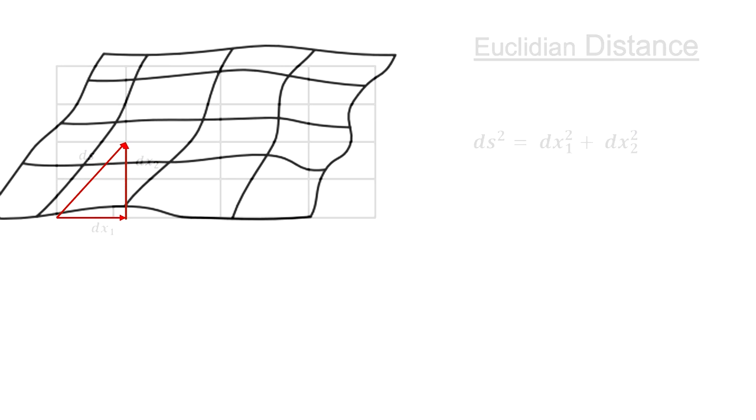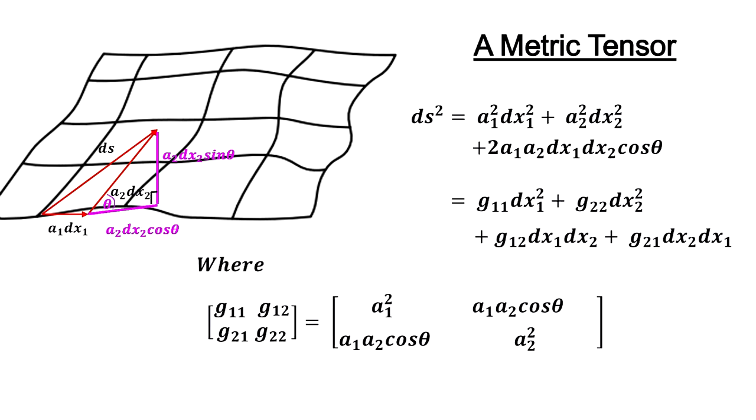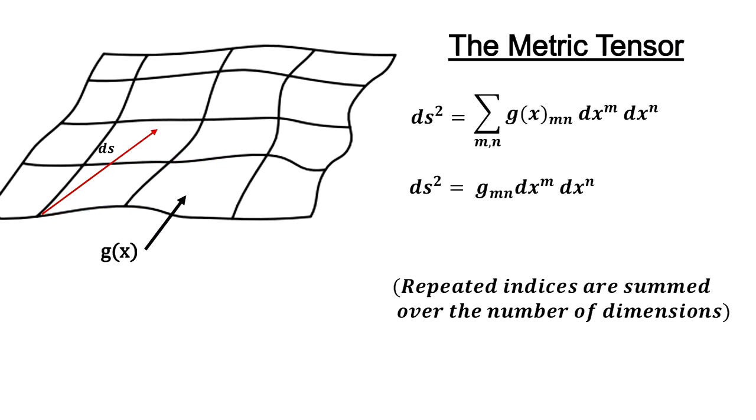We then generalize by adding coefficients to take into consideration the different scales or lines in different directions, and the fact that the lines no longer cross to form right angles. This is called a metric tensor. And finally, we extend the number of dimensions and generalize the coefficients to be functions of a location to take into account curved and changing coordinate systems.